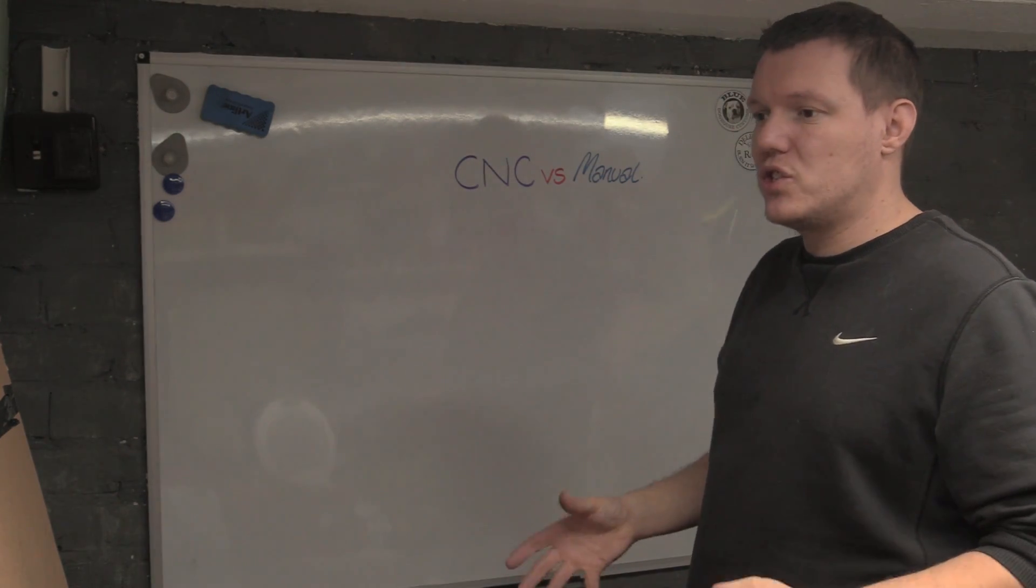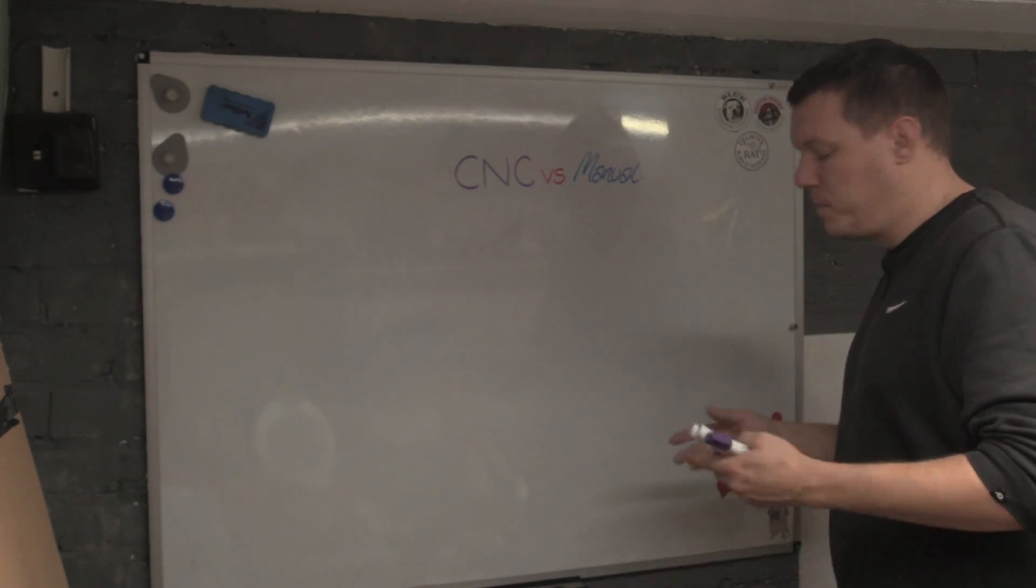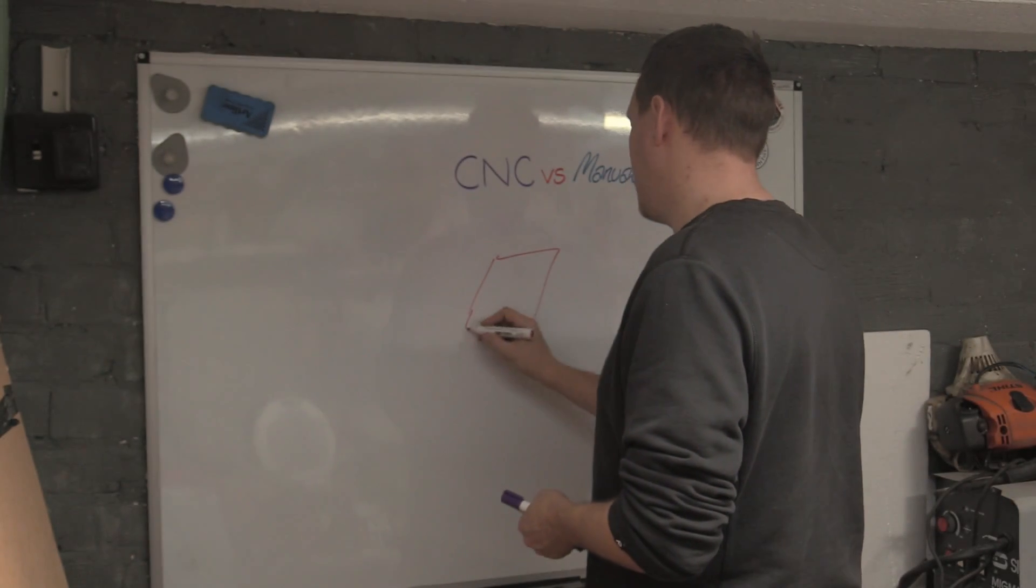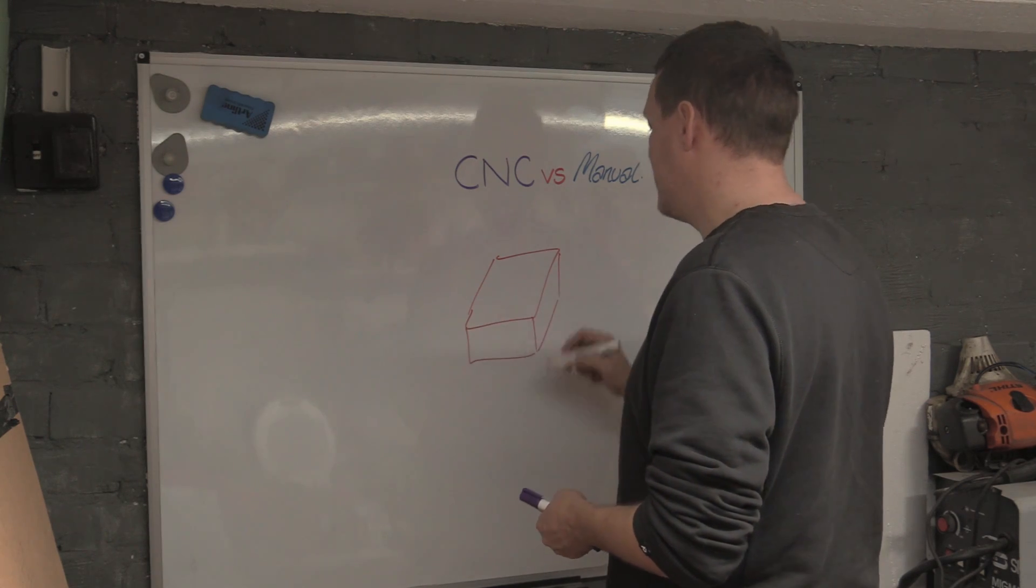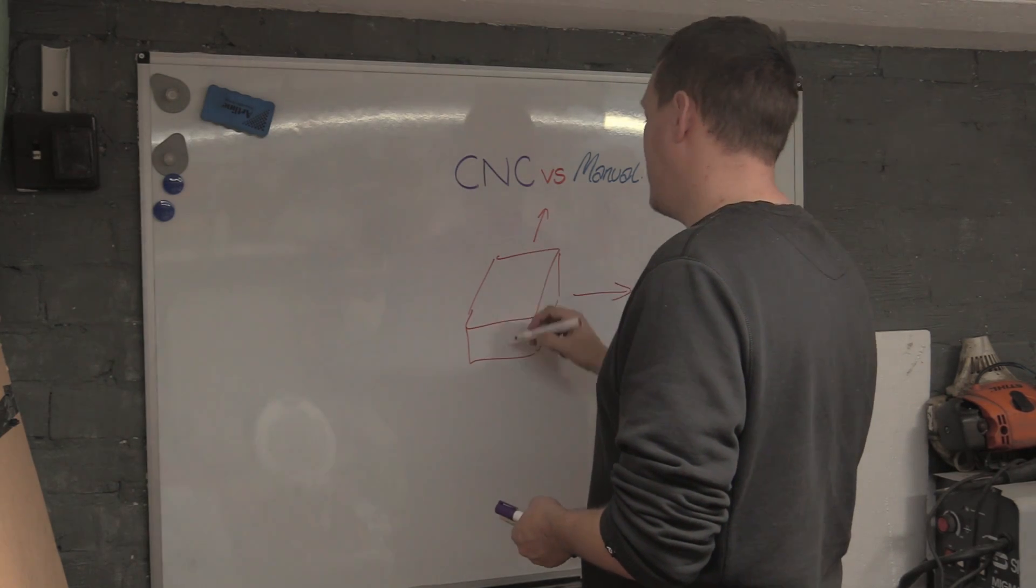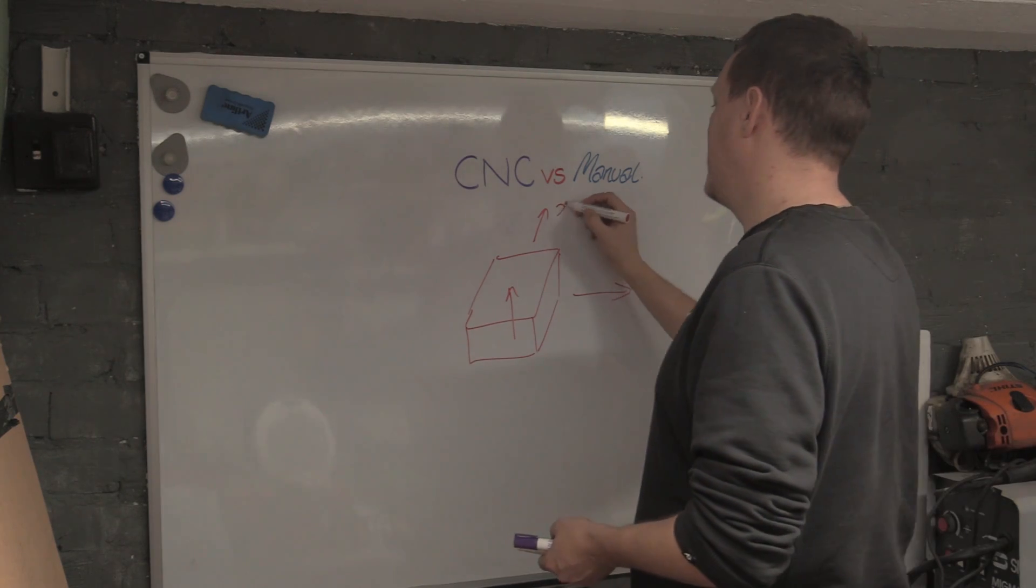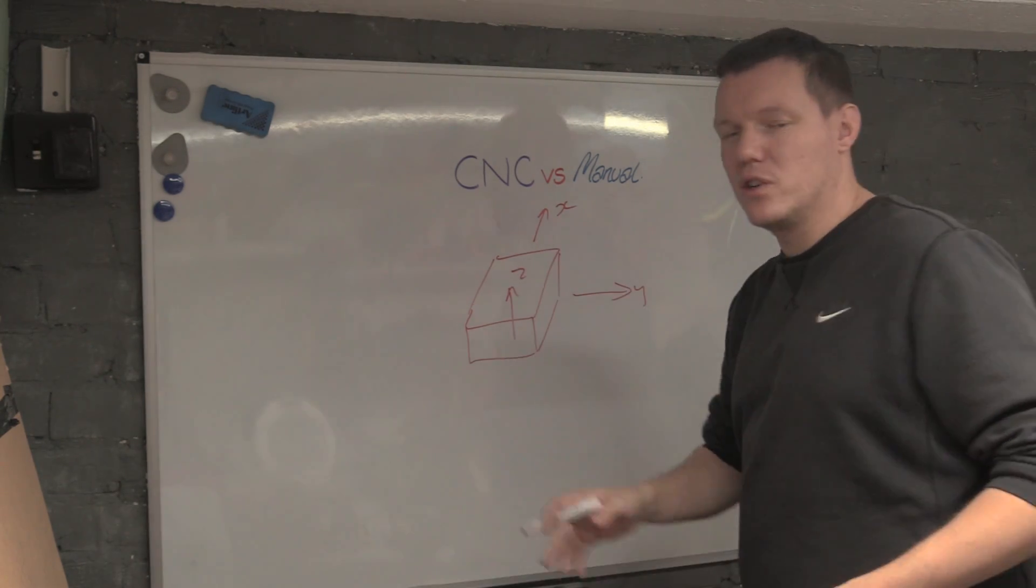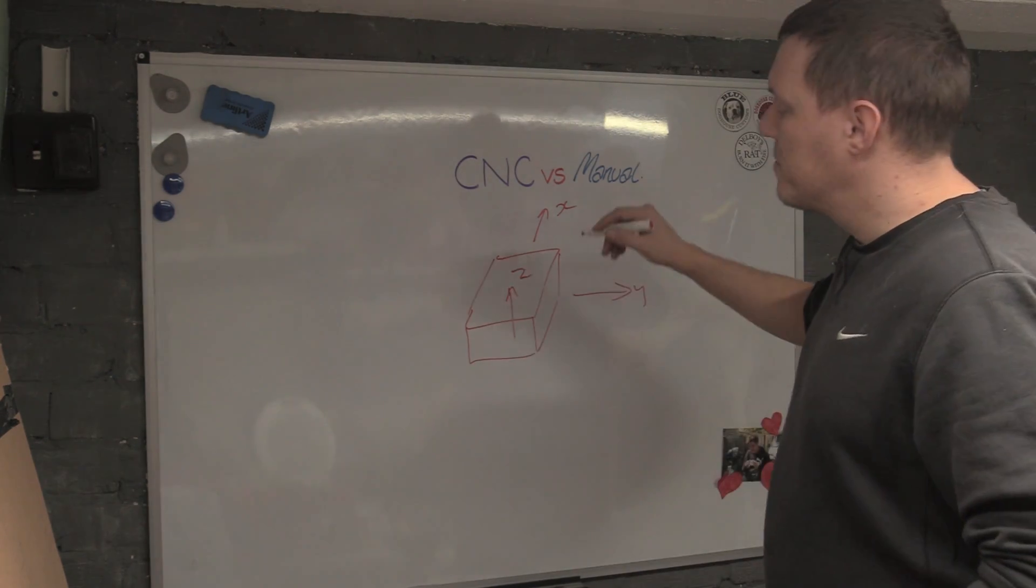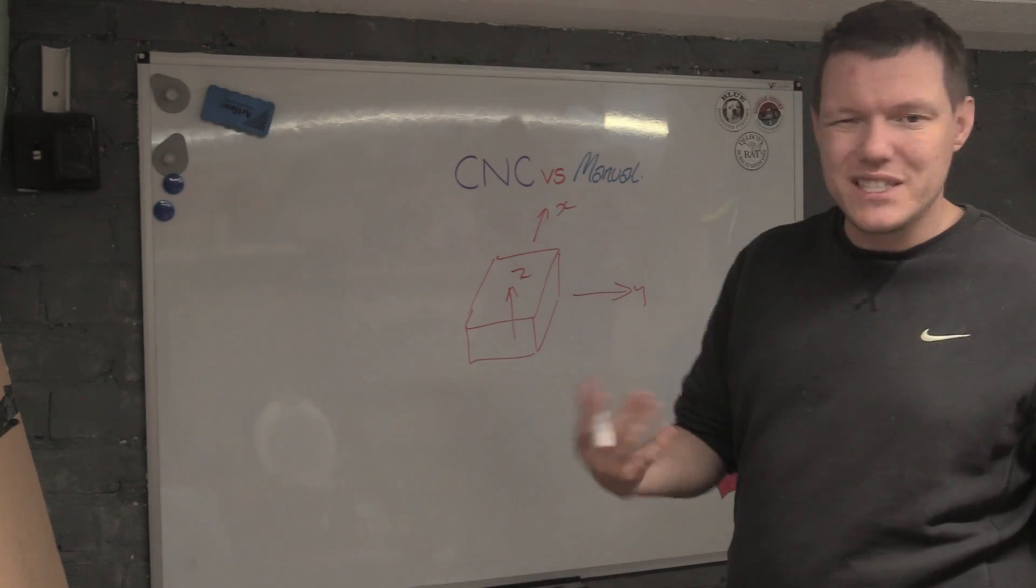Lathes and stuff, you spin the work and keep your tool still. That's the difference. But when you've got your work here, a block, you might have it clamped down or whatever, you can move it along all three axes: you can just move it in the X, the Y and the Z. Let's not get into who calls what Z, Y and X and all that, we'll be here all year.